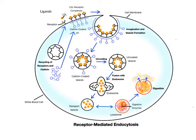Next, the formed vesicle is surrounded by a layer of clathrin proteins and is now called a clathrin-coated vesicle that traps the LDLs within it as it moves into the cytoplasm. Once in the cytoplasm, it loses its clathrin coat and becomes an uncoated vesicle. The released clathrin molecules return to the inner surface of the cell membrane and help form more clathrin-coated pits. Next, the uncoated vesicle fuses with another vesicle called an endosome. As their membranes fuse together, the LDLs are released from their receptors, which move to the outer edges of the endosome. Finger-like protrusions pinch off the endosome and enclose the receptors in transport vesicles that return them to the cell membrane for reuse.